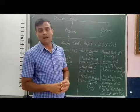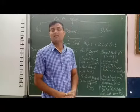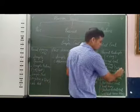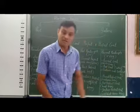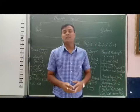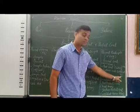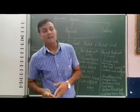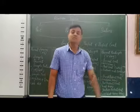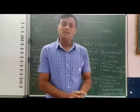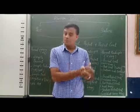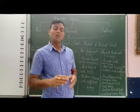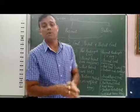We use present participle with 'have been' or 'has been' in present perfect continuous tense. We use verb with -ing with 'had been' in past perfect continuous tense. And we use verb with -ing with 'will' or 'shall have been' in future perfect continuous tense.